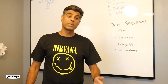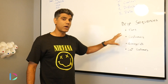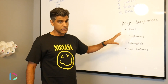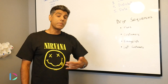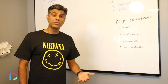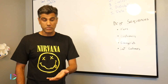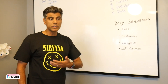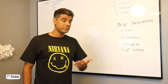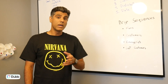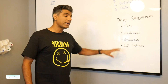Now moving on to distribution — the four most common drip sequences. The first is a drip sequence to your fans, people who follow you on social channels or subscribed to your newsletter. The second is customers — once they've become a paying customer, signed a contract, filled out a form, or put their credit card in, they get a specific drip sequence.